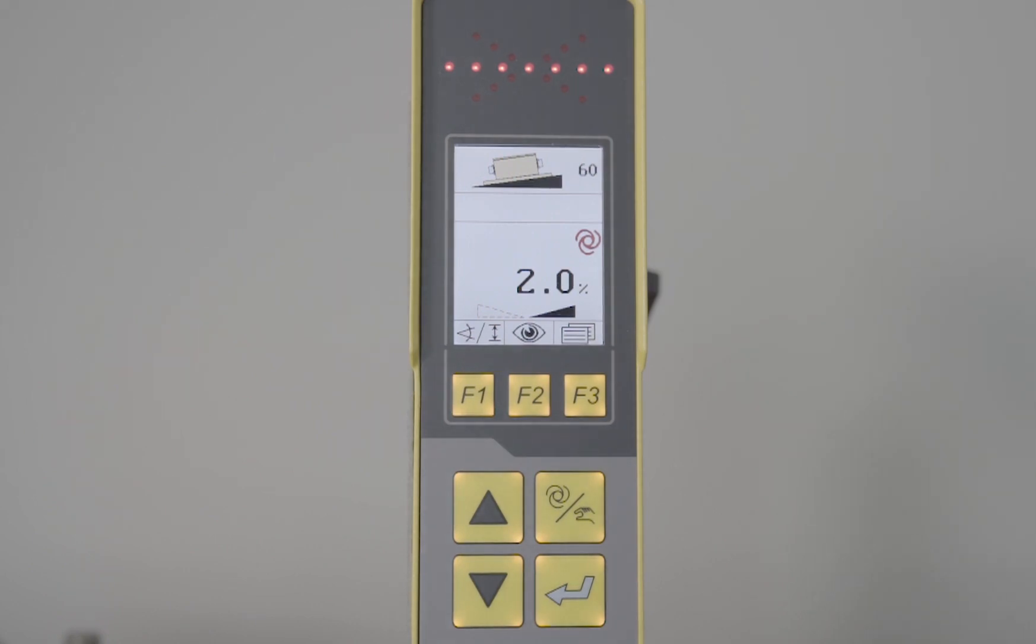After that, if you want to move that number to 2.5%, you can see the numbers of LEDs up top flashing. Now it's calling for movement in your tow point cylinder.